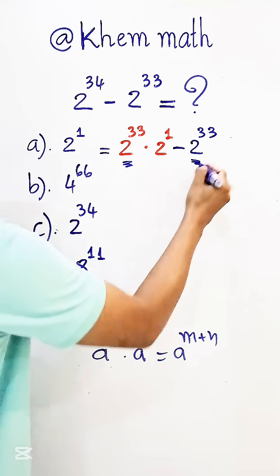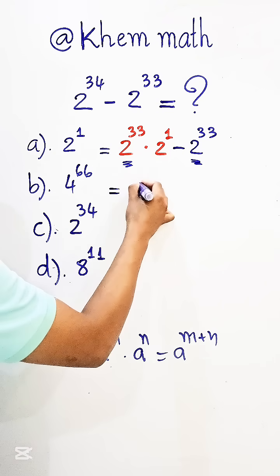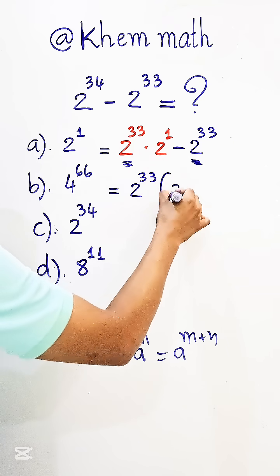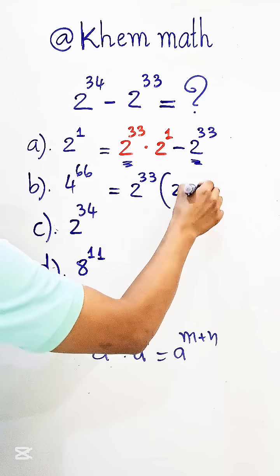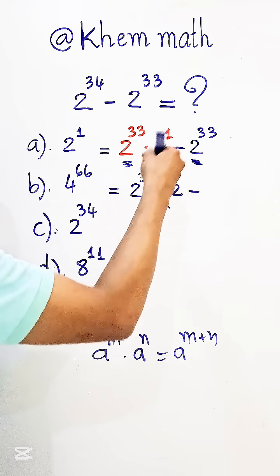Look, it's 2 to the power 33, the same. So we take this out as a factor. We get 2 to the power 33 times—this is 2 to the power 1, we get 2—and minus this, we divide by 2 to the power 33, we get 1.